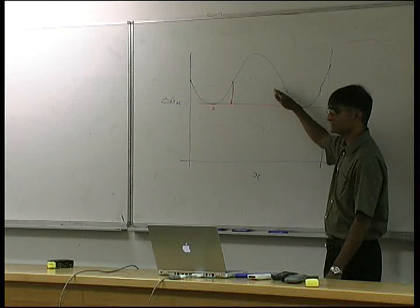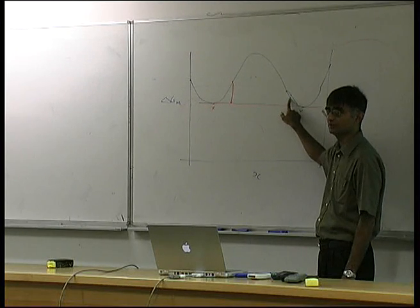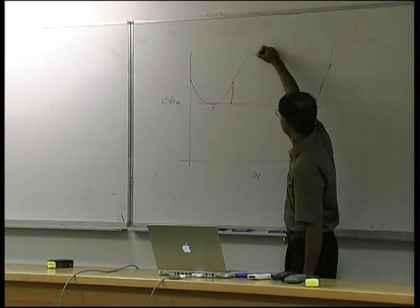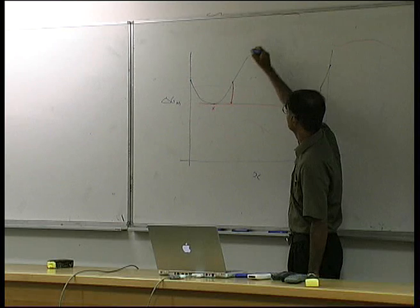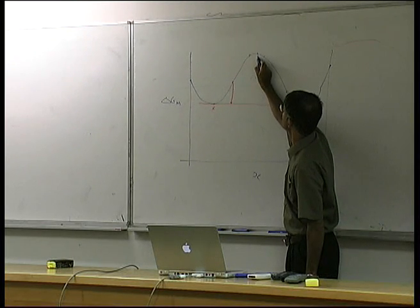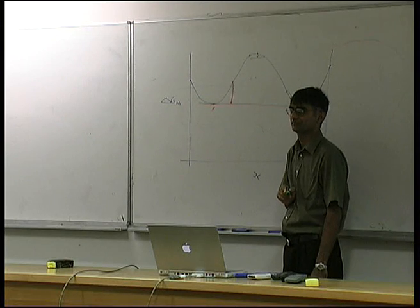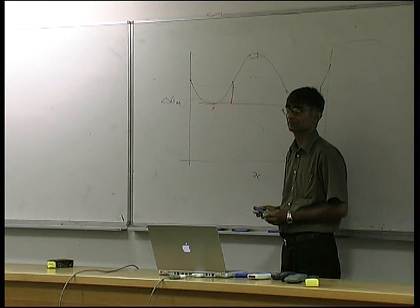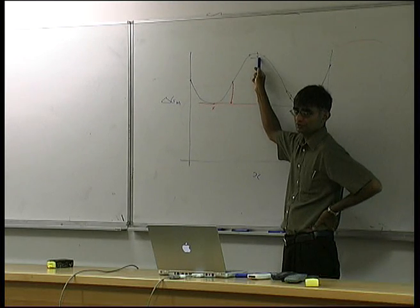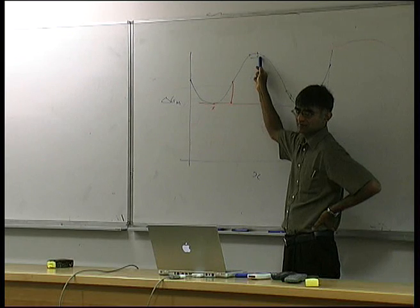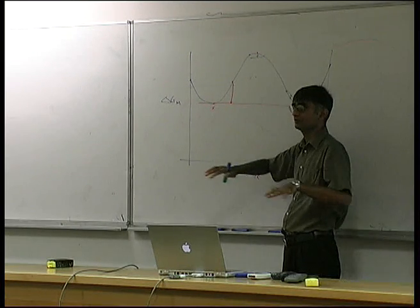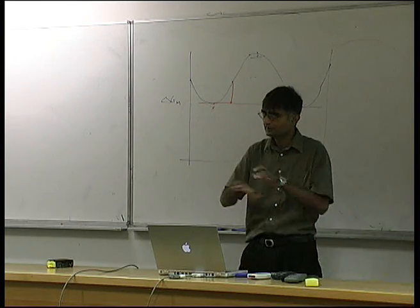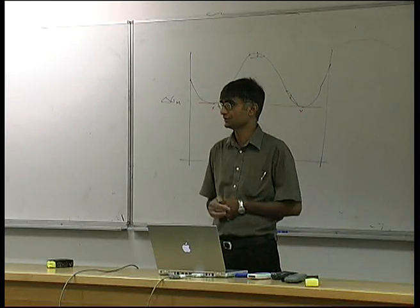I said that it's this curvature which causes the problem - that a small perturbation gives an increase in free energy. But notice that there is a region where no matter how small the perturbation, there will be a decrease in free energy. The curvature here has a different sign. So in this region, the solution ought to spontaneously decompose into a composition wave producing an A-rich and B-rich region.